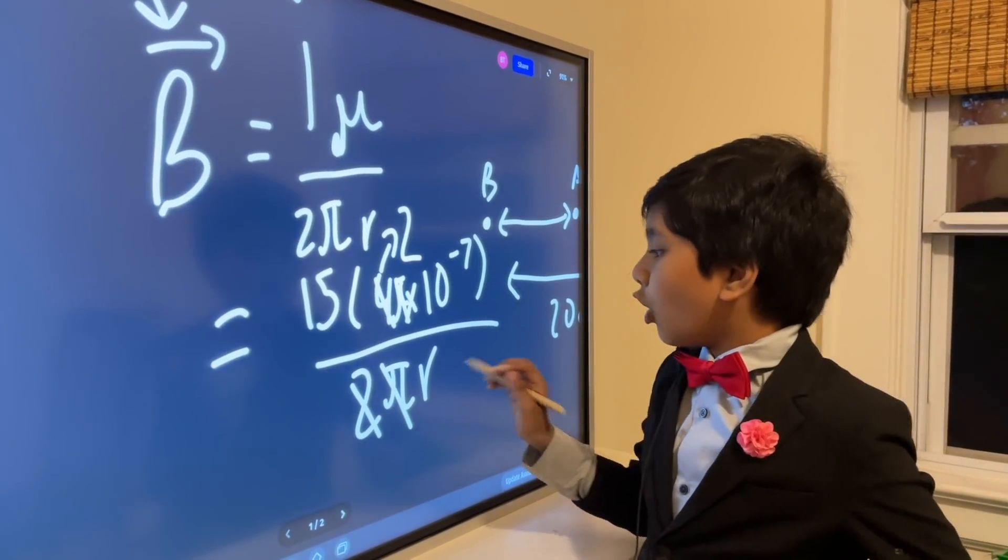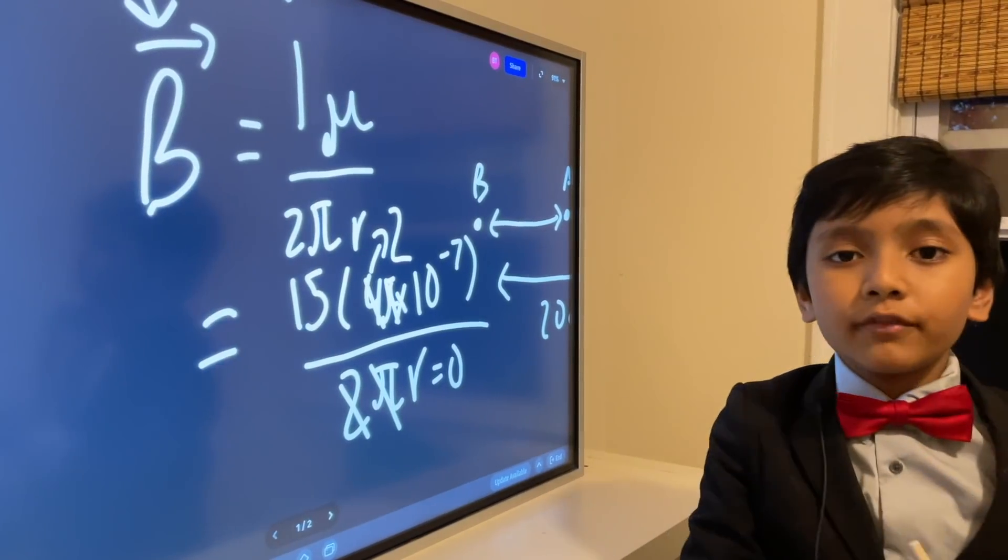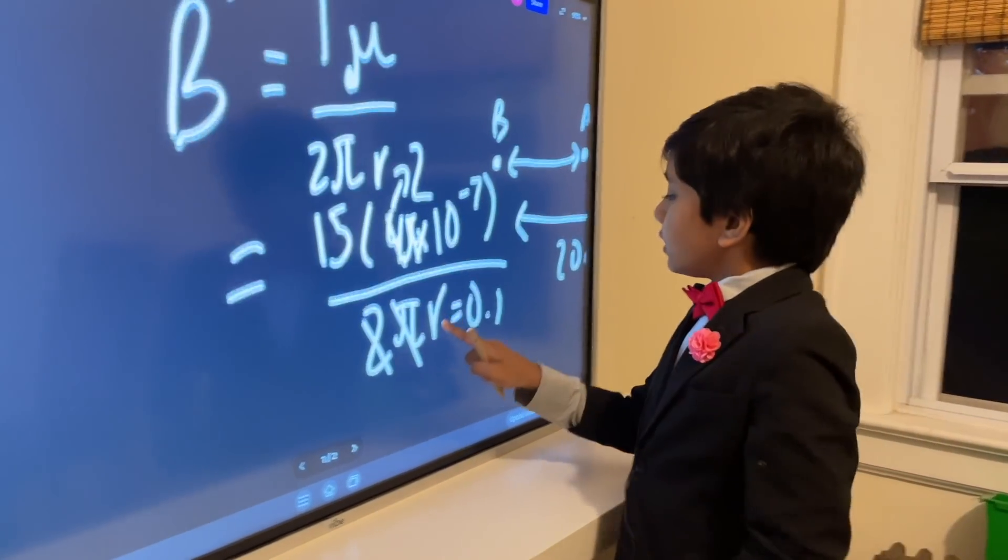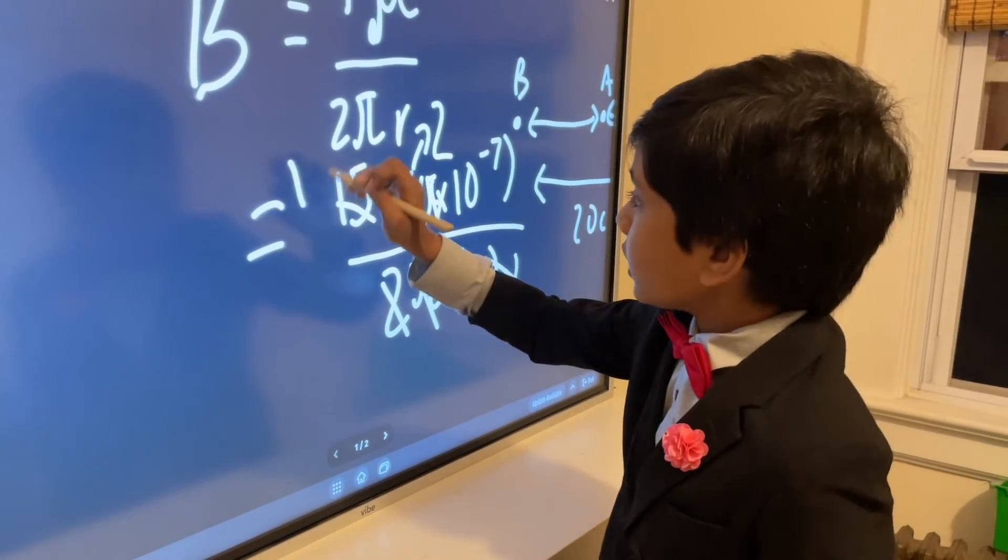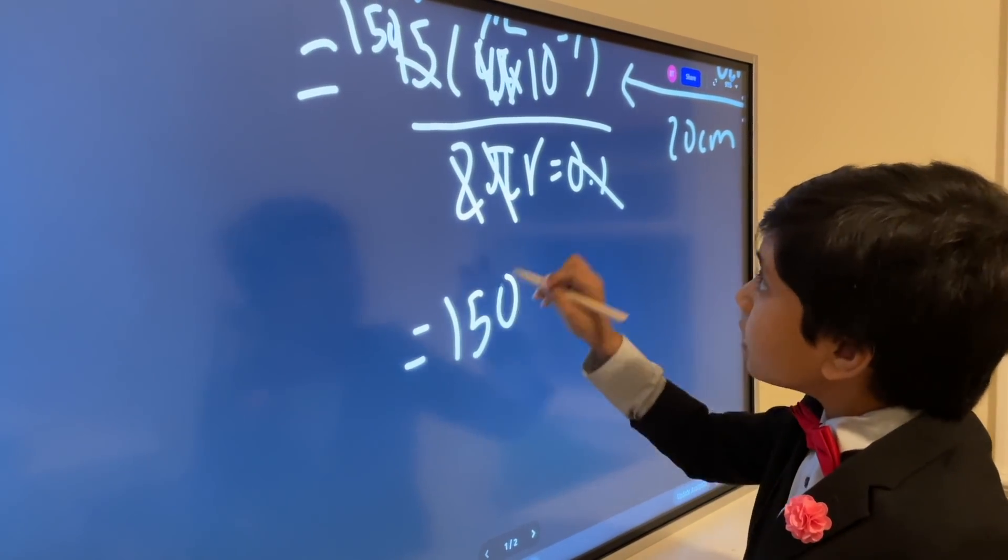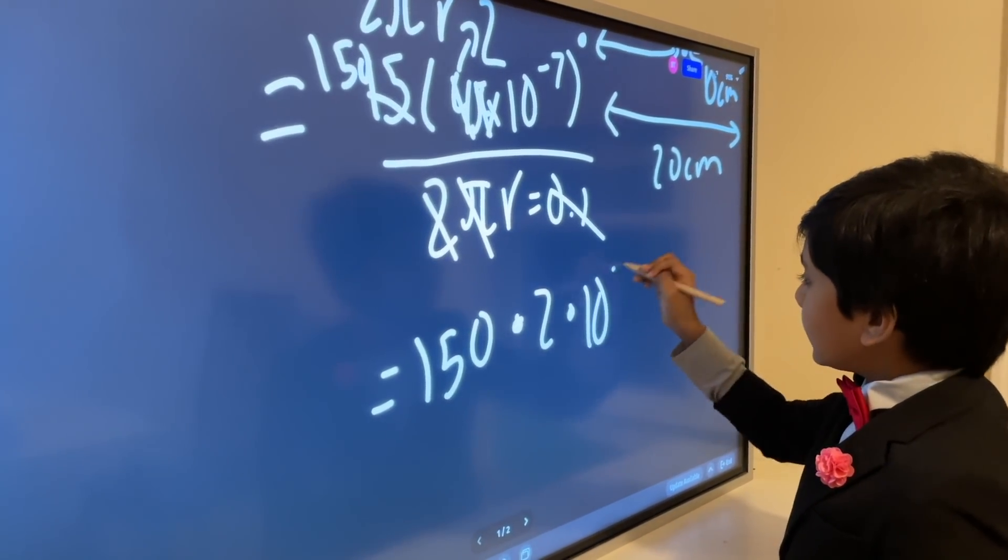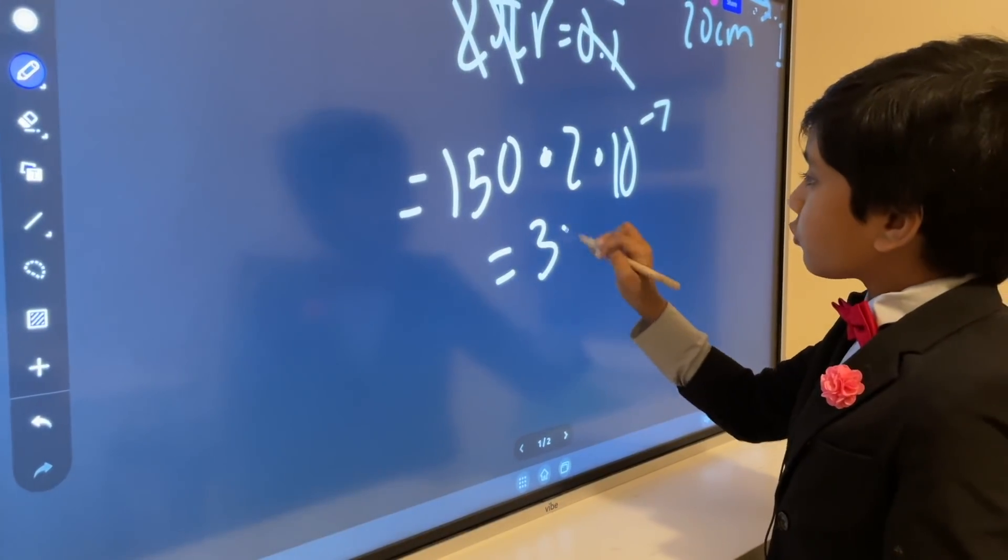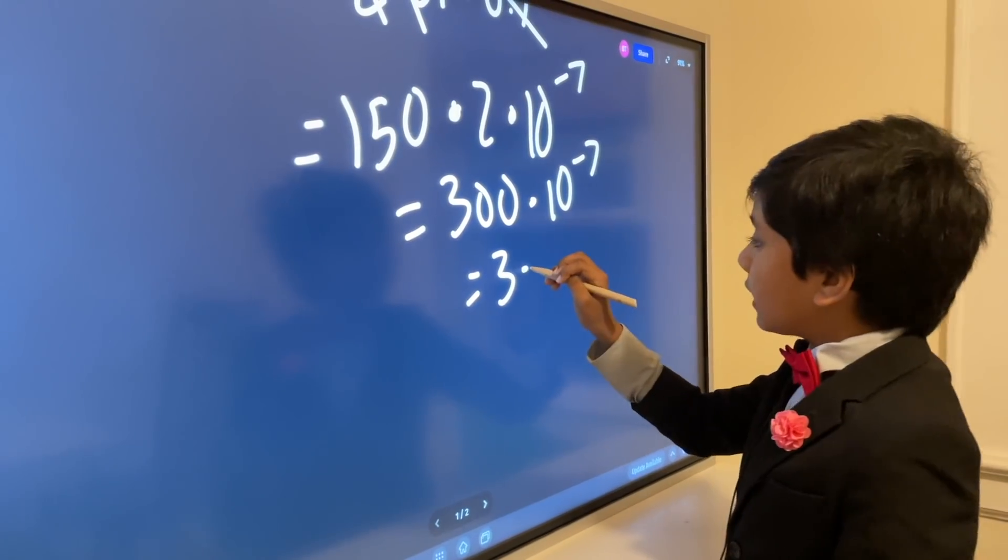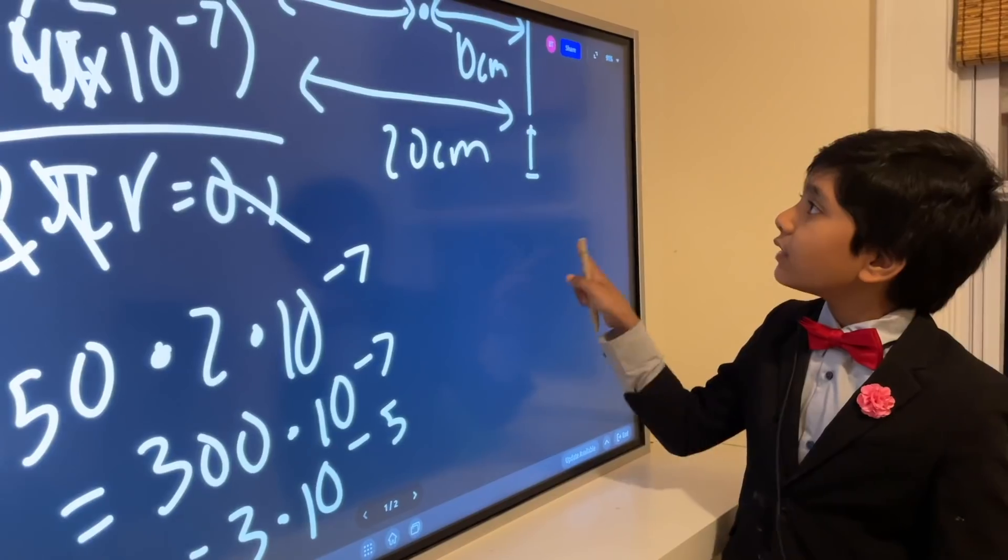And then we have r, which we'll plug in as 0.1, because if you convert 10 centimeters to meters, then you get 0.1 meters. So now, that goes into 15, 150 times. So you get 150 times 2 times 10 to the negative 7th, and then we have 300 times 10 to the negative 7th. So we go down two ranks, and we get 3 times 10 to the negative 5th. And now we have calculated it for A.